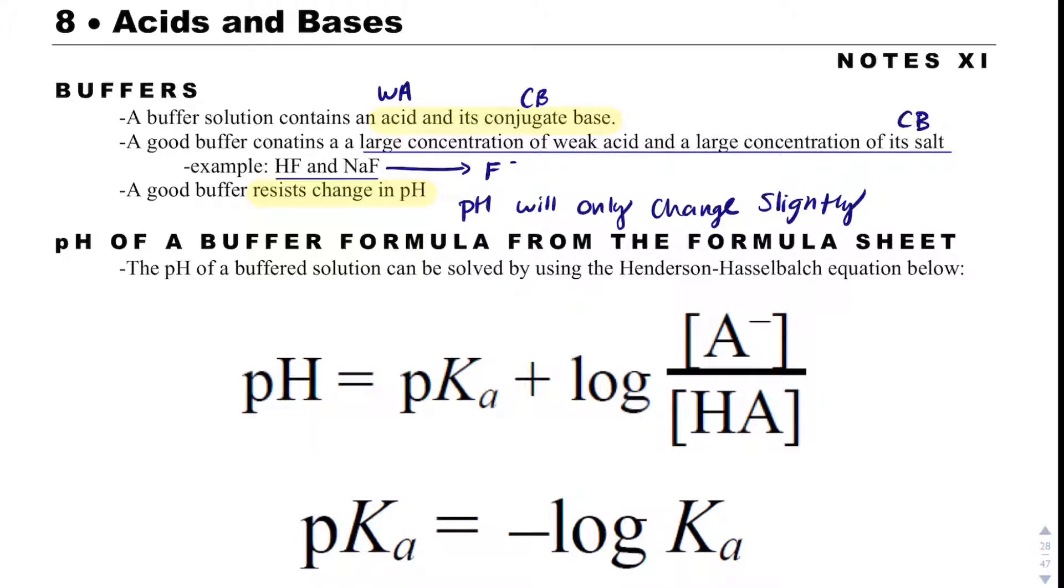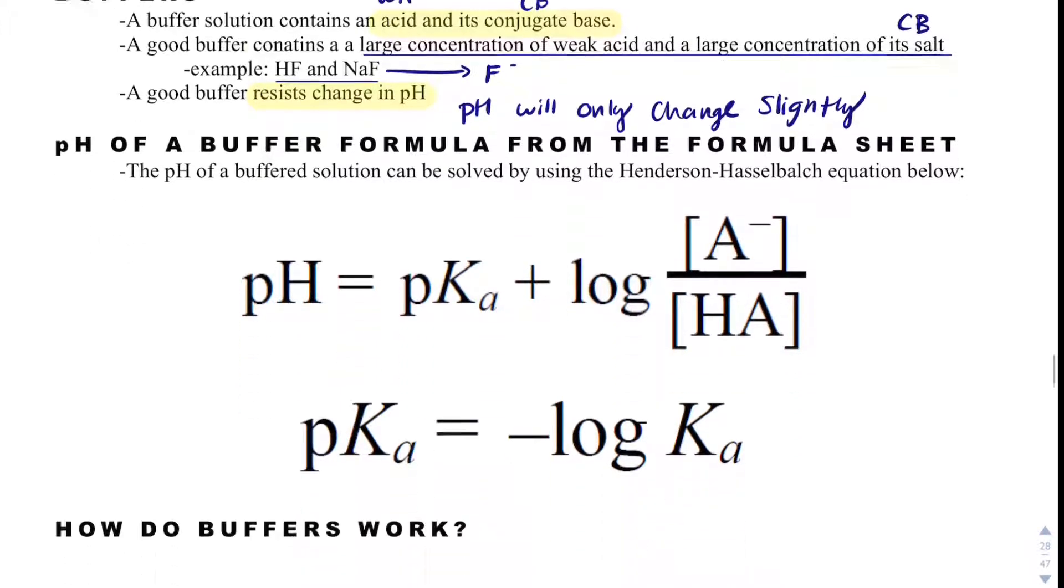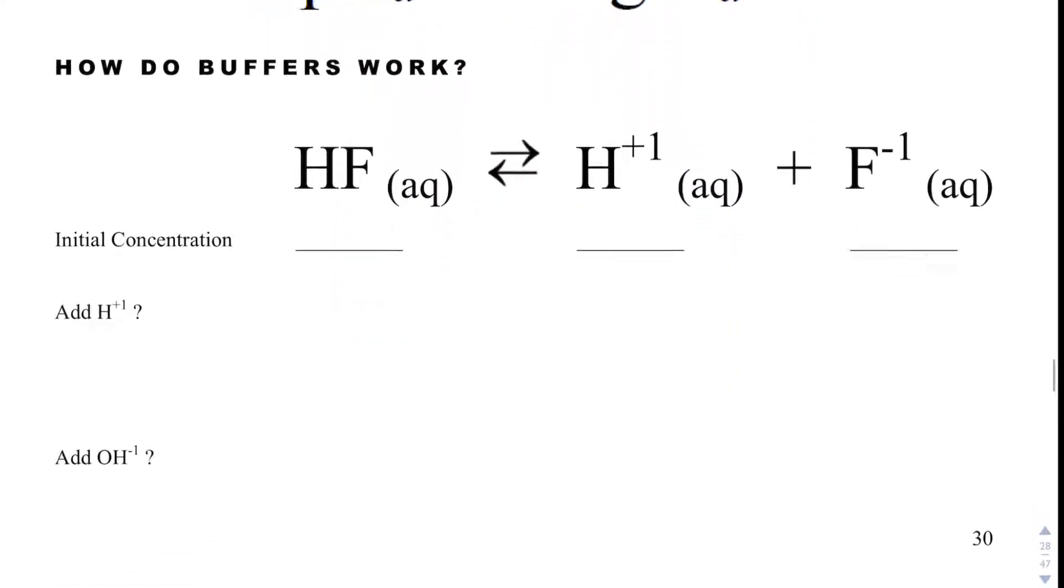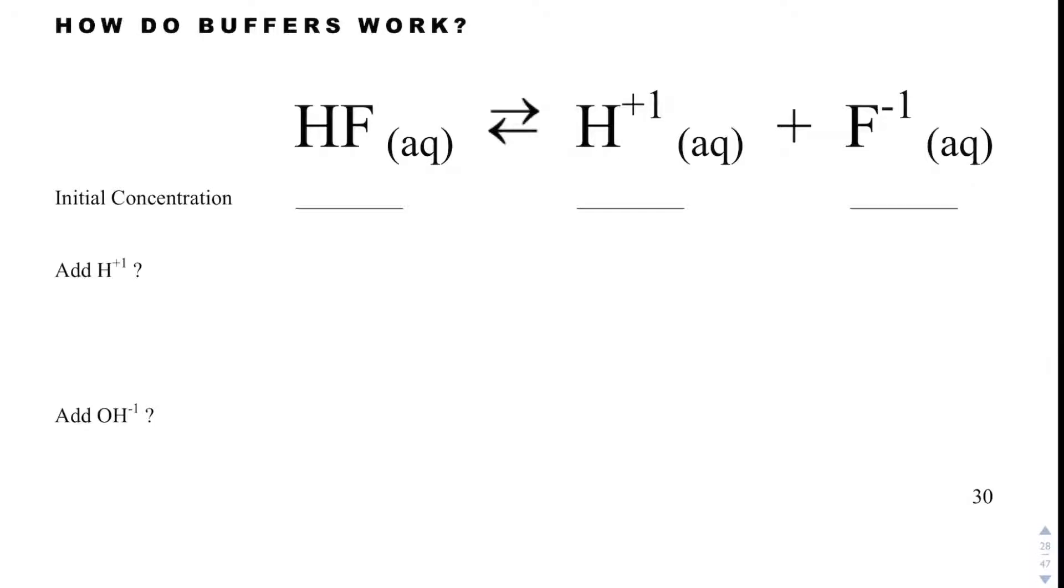We have a couple equations that are used for buffers. But let's first talk about how buffers work. So let's say I have a solution in equilibrium, and to make it a buffered solution, I need to have a lot of the acid. So I'm going to call that 1 molar. Then I need to have a lot of the conjugate base, and so I'll also call that 1 molar. And then, I don't know what the H plus concentration is, but let's just say it's 0.2 molar.